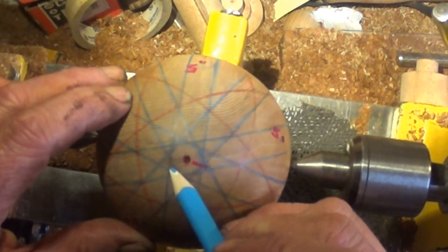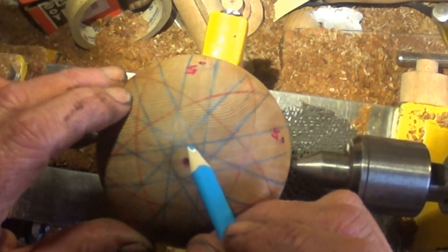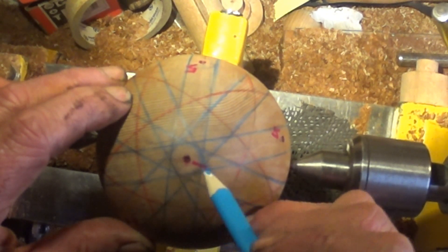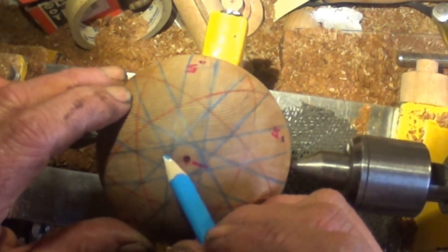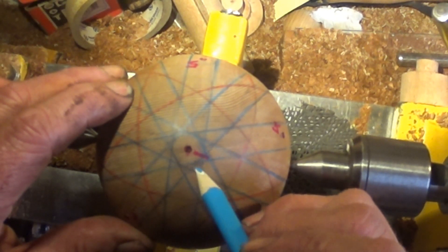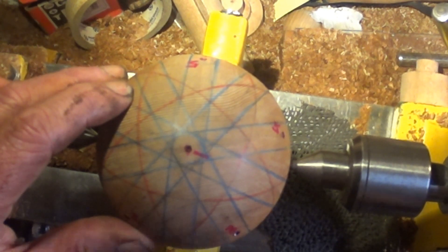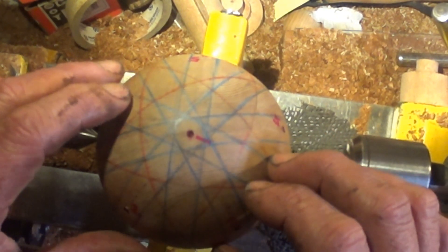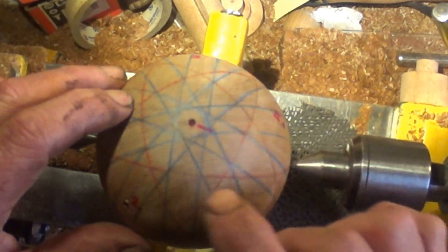The star we're actually going to use is a little truncated star inside here, and that will be marked out in black before we start piercing and hollowing, as will the other features.